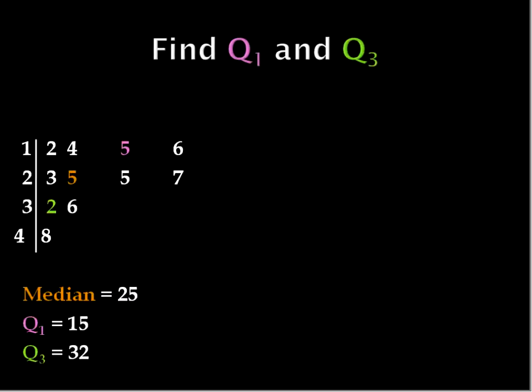And then we can list what we found. The median is 25. The first quartile is 15. The third quartile is 32. And that's how we would divide the numbers and find the quartiles.